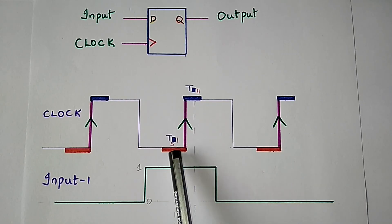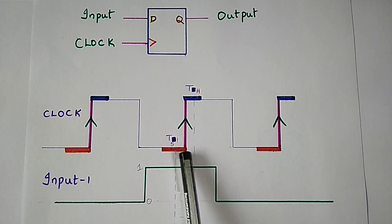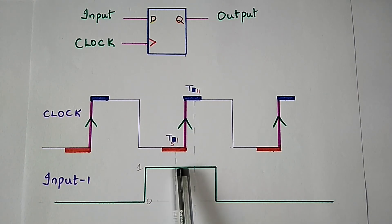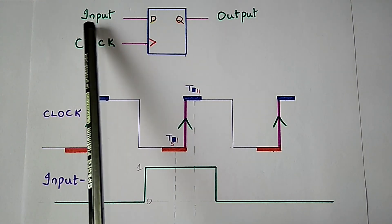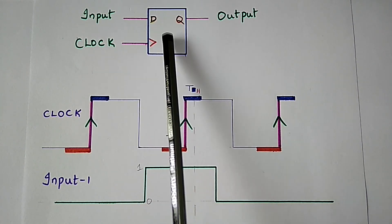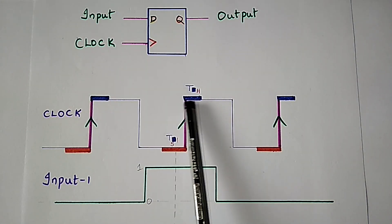Setup time (ts) is the amount of time before the active edge of the clock during which the input signal should remain constant, so that the input data is successfully stored by the flip-flop.